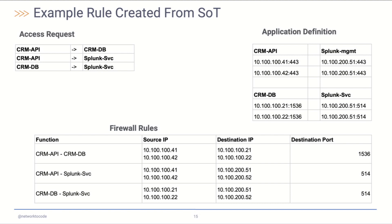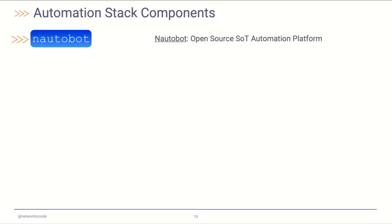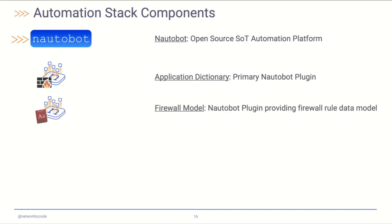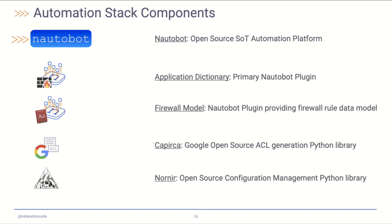We take an example from the previous slide and show how we combine the access request — source and destination — with the application definitions to get to the 5-tuple firewall rule configuration we're all used to. We can mind-map how we translate from the source IP and the SNMP ports to build out that firewall rule. In this demonstration, quickly reviewing the automation stack: we're using Nautobot as the open source source-of-truth automation platform, the Application Dictionary plug-in, and a separate plug-in for a firewall model. Then using Capirca — that models from policy and service terminology to vendor-specific syntax, specifically Palo Alto, but it can translate to JunOS, IOS-XR, ASAs, etc. And finally Nornir to deploy the configurations.